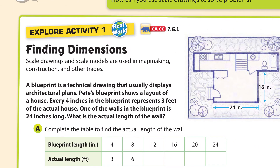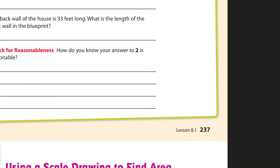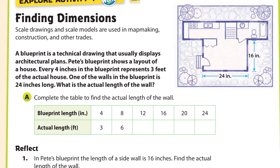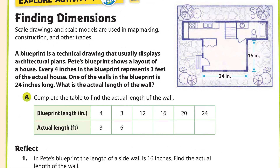This is all taken from your textbook, page 237, lesson 8.1. Scale drawings and scale models are used in map making and construction and other trades. This is a blueprint — a drawing that usually displays architectural plans. This is Pete's blueprint, which shows a layout of a house. Every four inches in the blueprint represents three feet. So four inches corresponds to three feet.